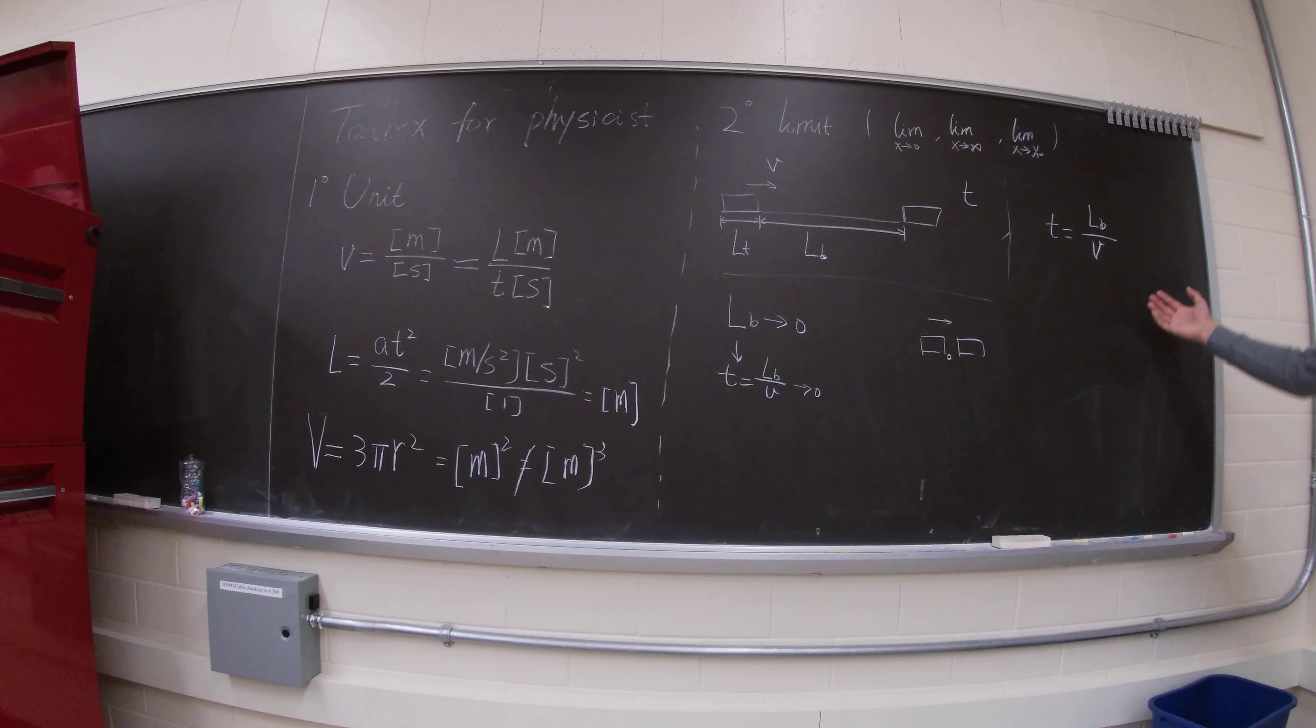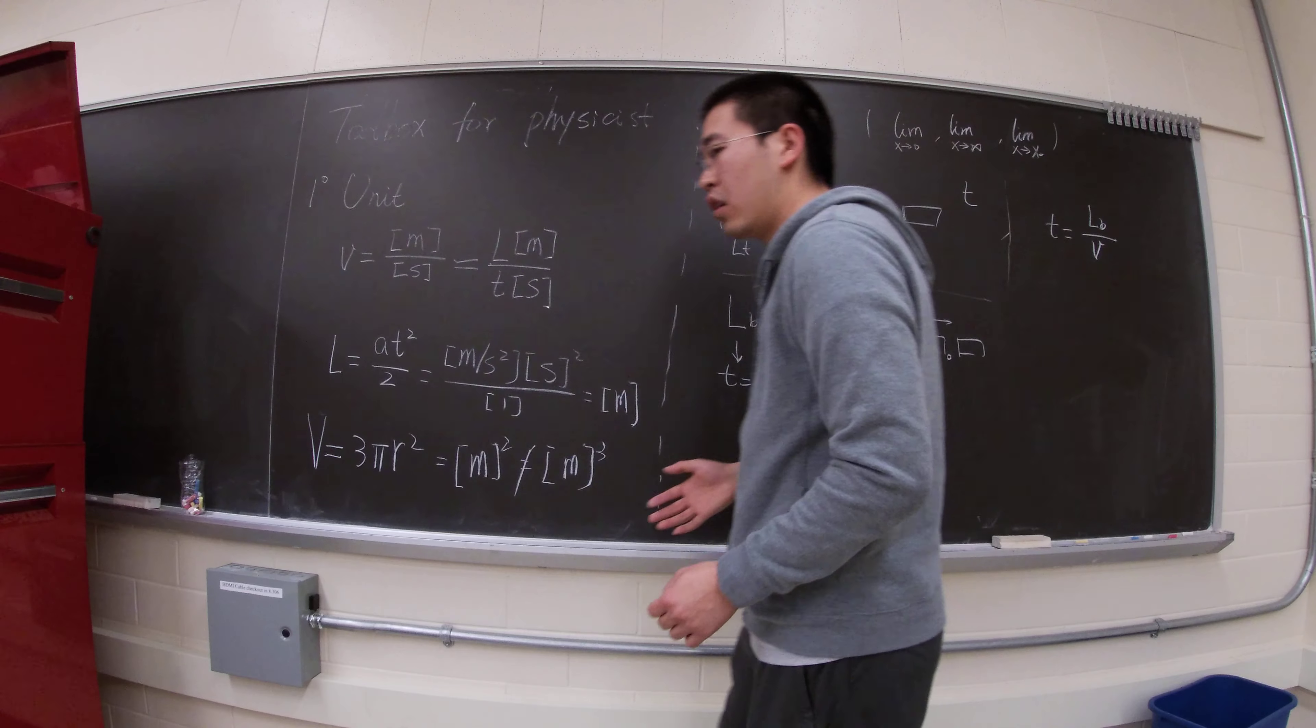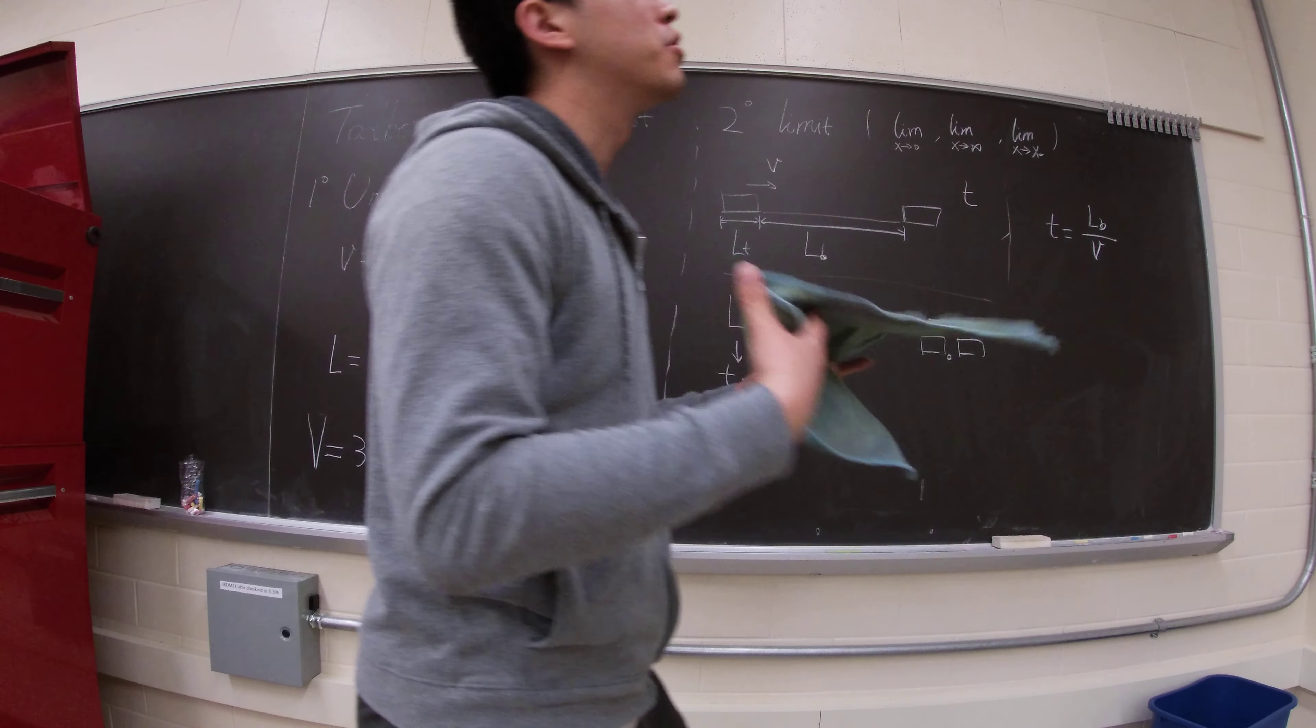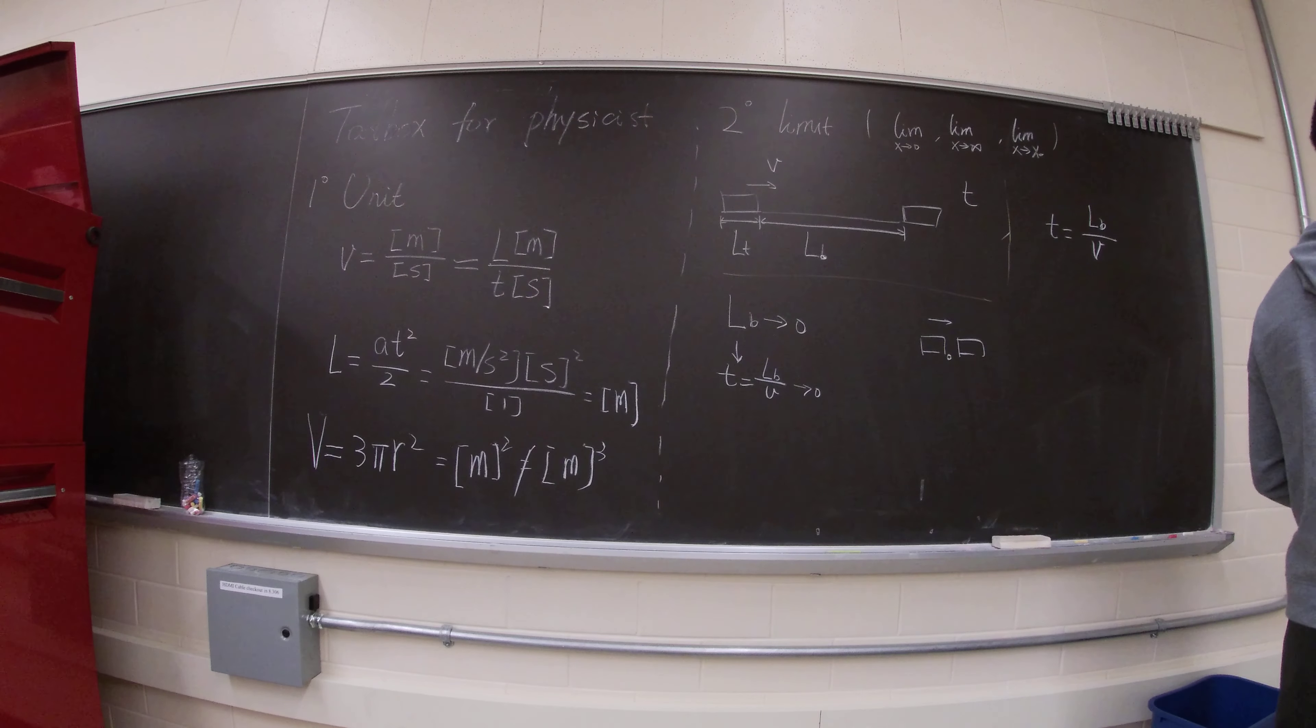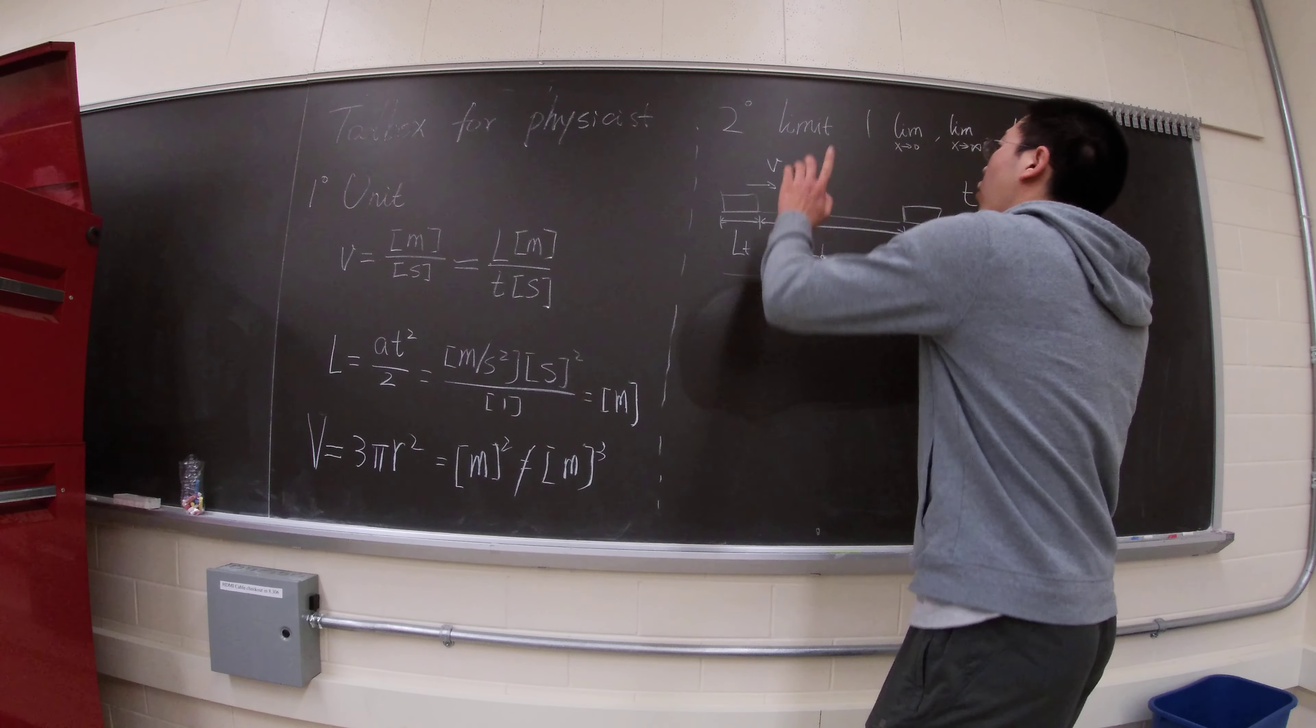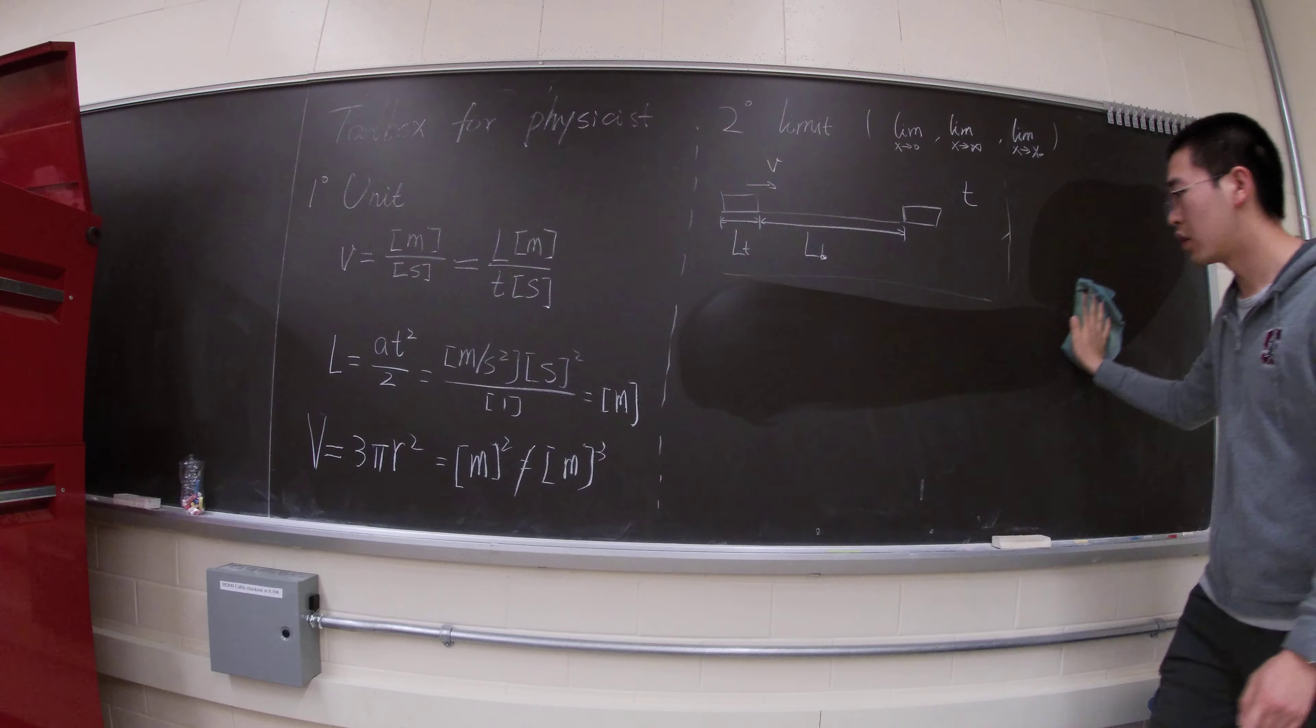So of course, this answer is incorrect. So how about, like let's say, we don't even know the answer. We don't know physics, the common sense is out of your brain. But we can just use only the limit and unit to get an answer. So how do I do that?